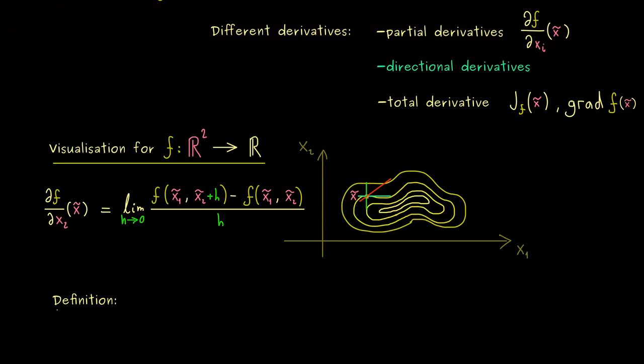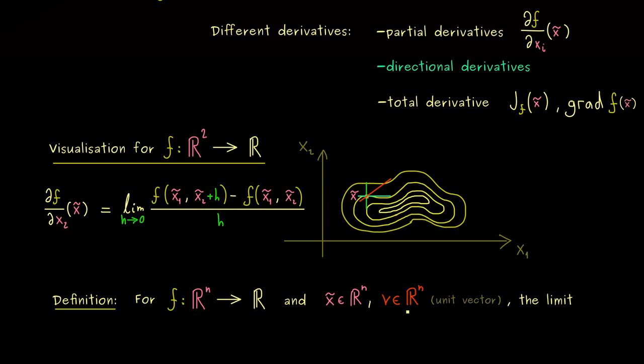However, we need to think a little about how this definition should look. In particular, we want a closed formula for a general function f defined on R^n. So we consider such a function and the point x̃ in the domain. We also need to fix a direction, which we call v — a vector in R^n describing the direction. The length of the vector should not be important, just the direction, so one often chooses a unit vector with length 1 for v.